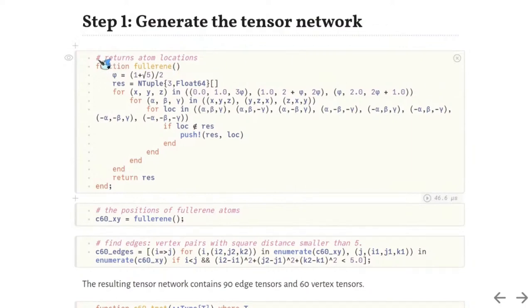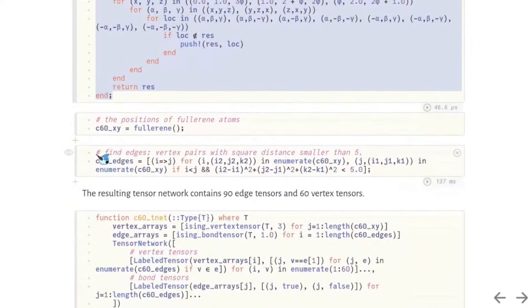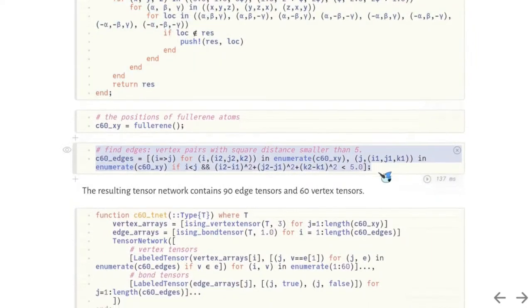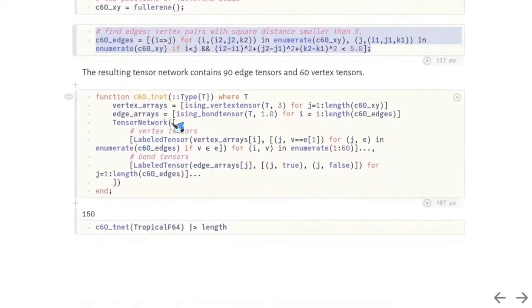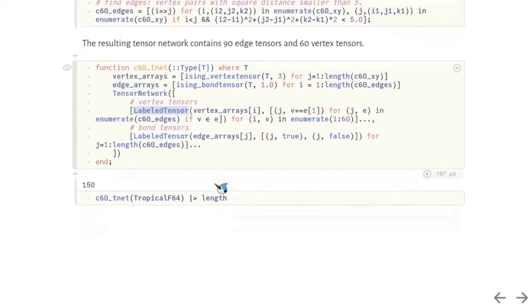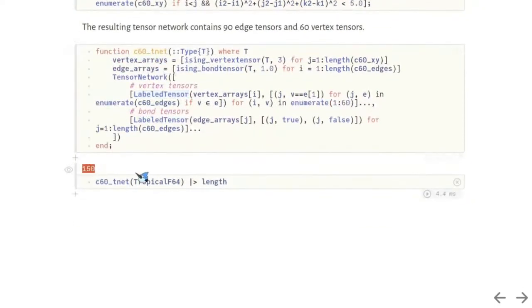In the following, I will show how to solve the buckyball challenge step by step. First, we construct the buckyball tensor network. We compute the spin locations, and the edges. The tensor network constructor takes a vector of tensors as the input. The tensor legs are labeled. The legs with the same label are contracted. There are 150 tensors in total. 60 of them are for vertices, while 90 of them are for edges.